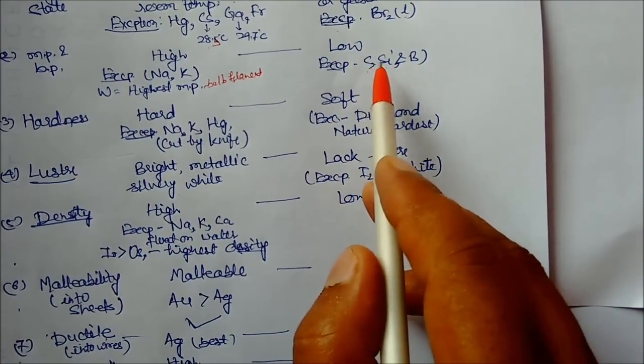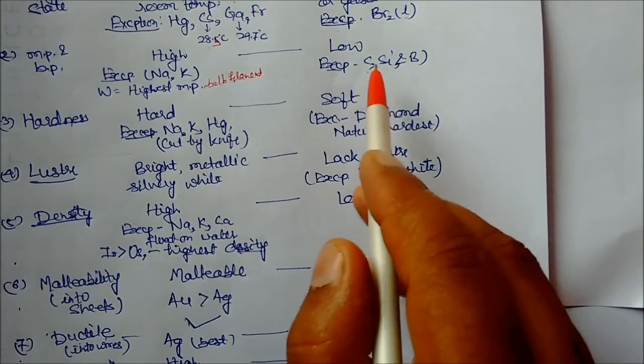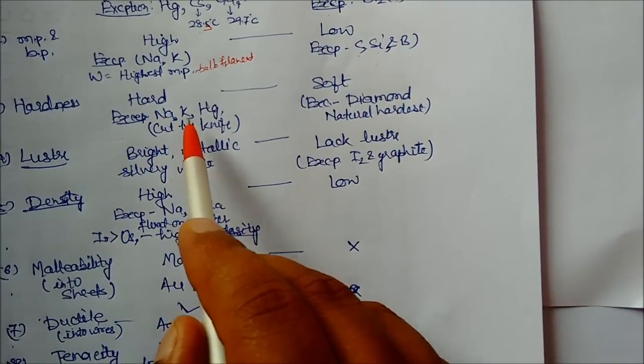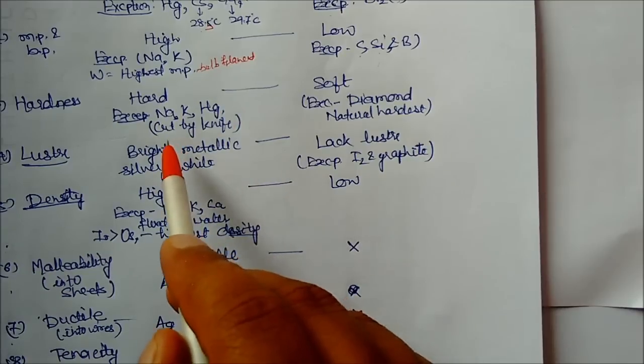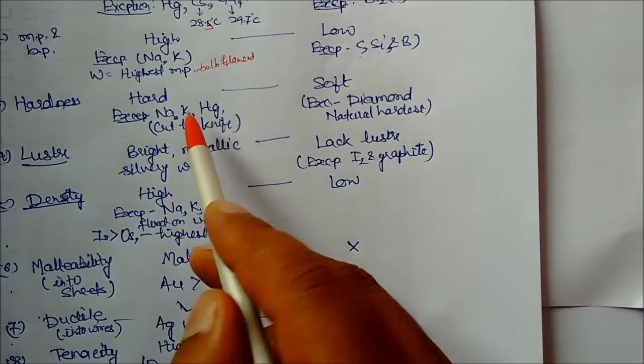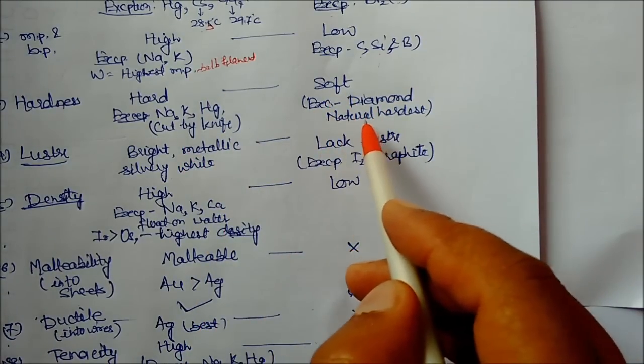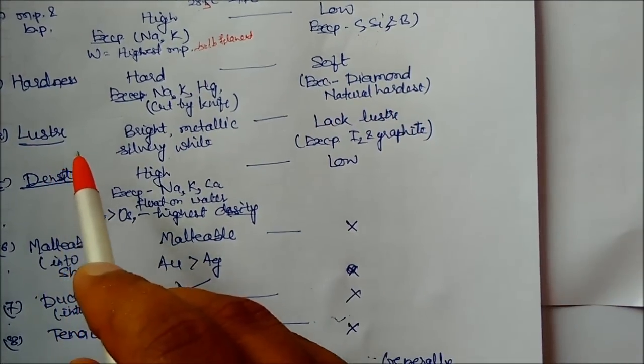Hardness: if you take diamond, it has high melting point and boiling point. Metals are very hard. Exceptions: sodium, potassium, mercury are so soft that they can be cut by knife. Nonmetals example: diamond is very hard.